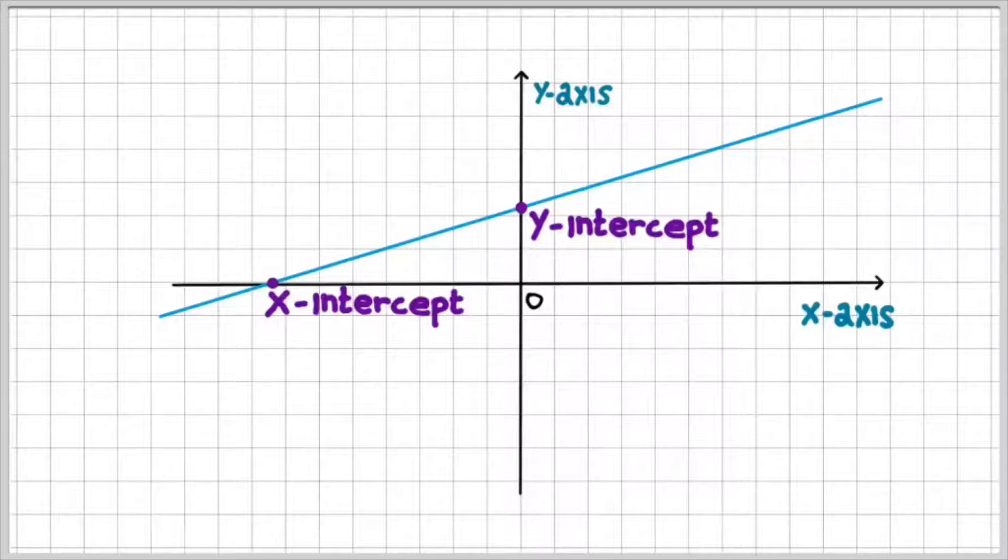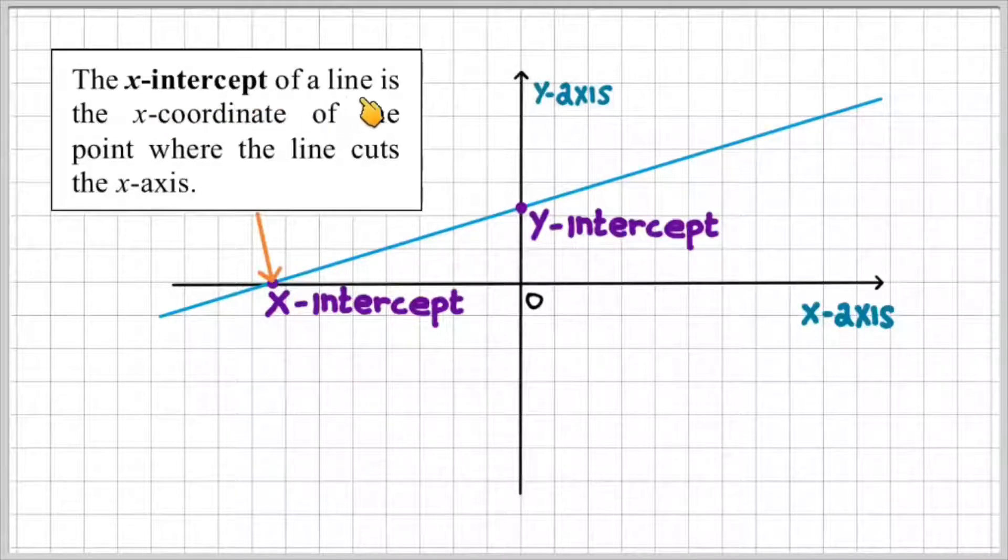So let's look at what the intercepts represent. The x-intercept of a line is the x-coordinate of the point where the line cuts the x-axis. That's my x-axis here running across horizontally, and my straight line, my linear equation, is cutting through at a point where the line cuts the x-axis is called the x-intercept.